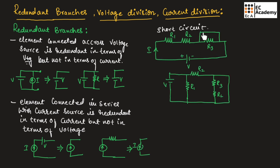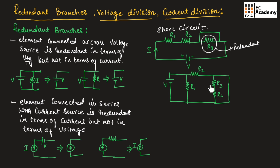If we consider a circuit in which we have a short circuit, the elements connected in parallel to the short circuit are redundant. Resistor R3 is redundant in the circuit, which means whatever current flows will flow through the short circuit, and current will not flow through the resistor. In the second circuit, resistor R3 and RL are redundant because they are connected in parallel with a short circuit, so we can neglect these two resistors since all the current will flow through the short circuit.